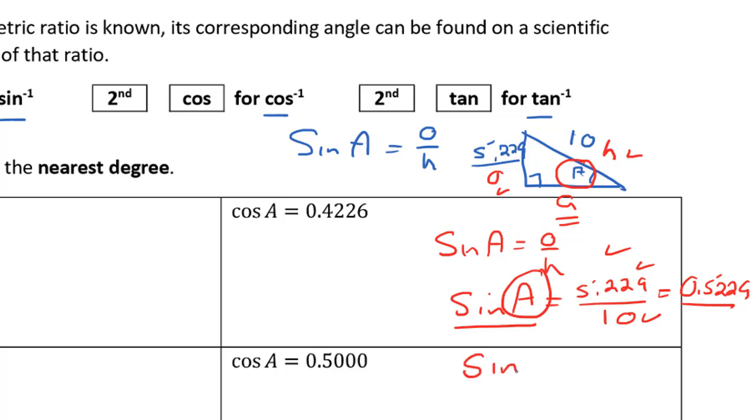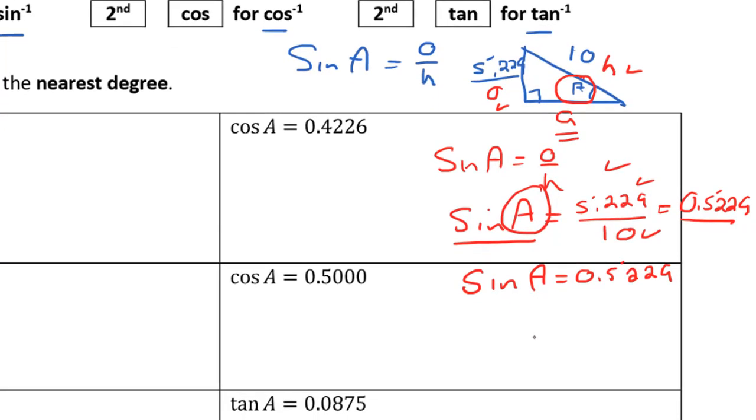Let's rewrite this: sine of angle A equals 0.5229. Now we want to find out what A is, not what sine of A is. So somehow we have to effectively move this over. What happens when we move the sine away from an angle is it turns into sine inverse.